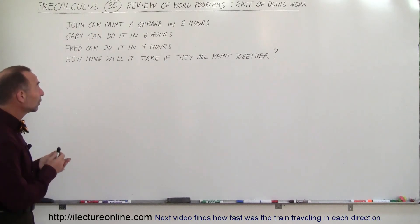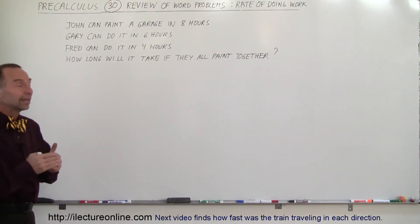And in this case we have John who can paint a garage in eight hours. We have Gary who can do it in six hours and Fred who can do the same job in four hours. How long will it take all three of them if they can paint together?